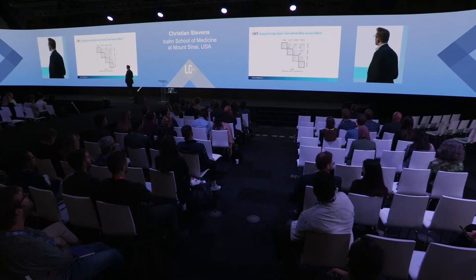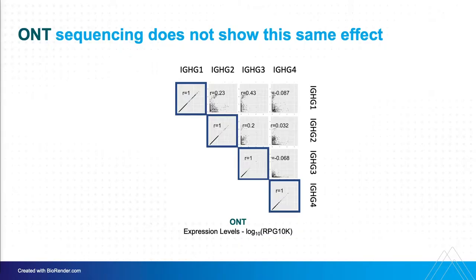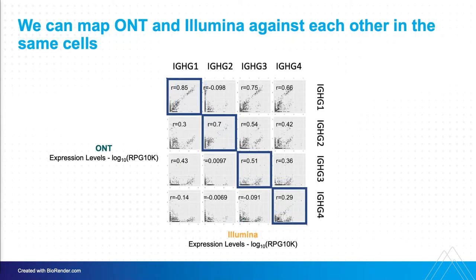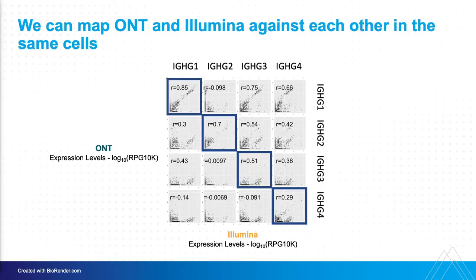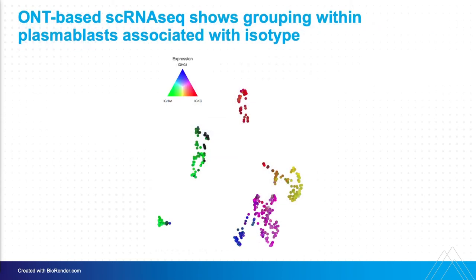When we look at ONT sequencing, we do not see these overlaps — that's really, really exciting. Our IgG1, IgG2, IgG3, and IgG4 are all non-overlapping, which is exactly what we're hoping and expecting to see, and what was really hard to establish with Illumina data. What's happening is that the highly expressed IgG1 was being picked up and misassigned into IgG3 and IgG4 when Illumina was looking at it. So we're able to map out with more confidence what we're seeing for different isotypes in individual cells.